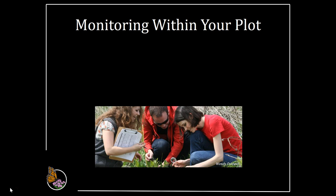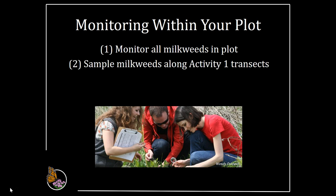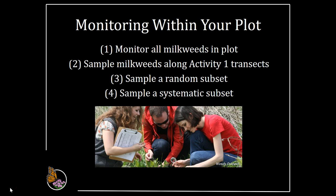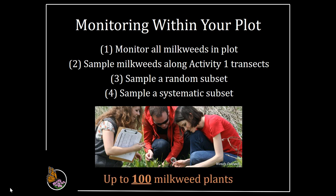There are four ways that you can locate milkweed plants to examine within your plot. First, you could monitor all the milkweeds in your plot. For plots where there is too much milkweed to reasonably examine all plants, there are three ways to examine a subset: sample along Activity 1 transects, sample a random subset, or sample a systematic subset. You will only need to examine up to 100 milkweed plants. At that point, you can choose to stop or keep examining more. If there are fewer than 100 plants, you can stop when you've completed your chosen sampling method.